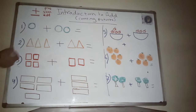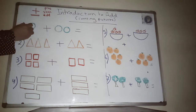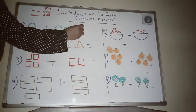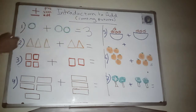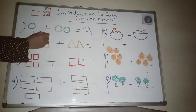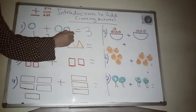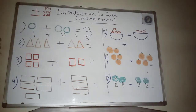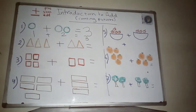The first example: I have one circle and two more circles. How many circles do we have? Let's count — one, two, three. So I have three circles. One plus two equals three.